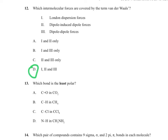Question 13 asks which bond is the least polar. Carbon–oxygen is very polar because oxygen is especially electronegative. Carbon–chlorine is very polar because chlorine is highly electronegative. Nitrogen–hydrogen has hydrogen bonding, making it very polar. Carbon–hydrogen has a difference in electronegativity that is not zero, but it is considered almost non-polar and is the least polar bond of those listed.